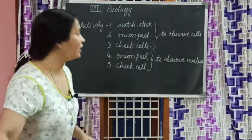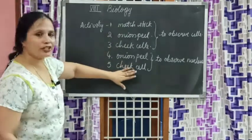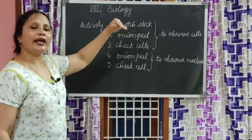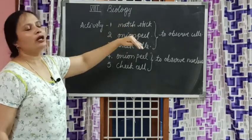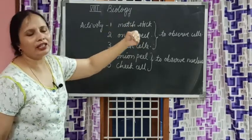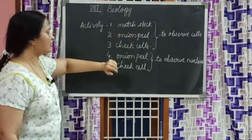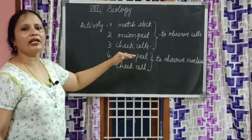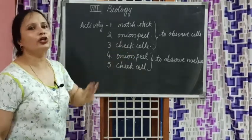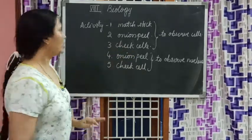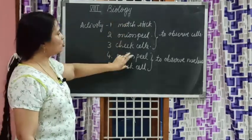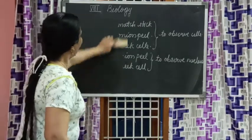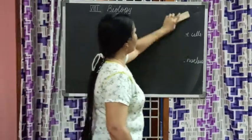So how many activities did we do till now? We did five activities. Three of them establish the fact that every individual - be it human, animal, or plant - is made up of cells. The fourth and fifth activities explain that every cell has a nucleus present. The first three prove Robert Hooke, and the last two prove Robert Brown.